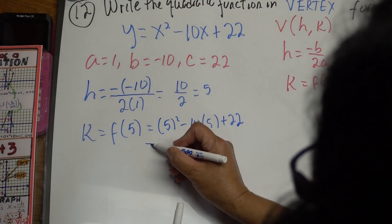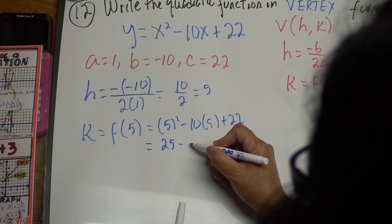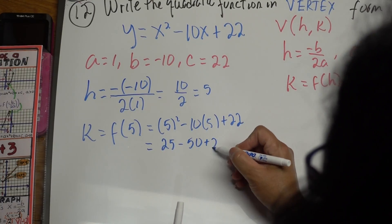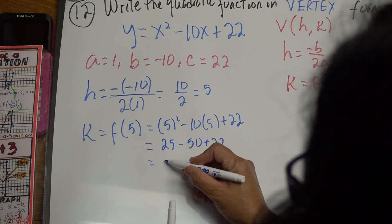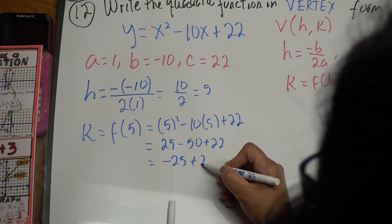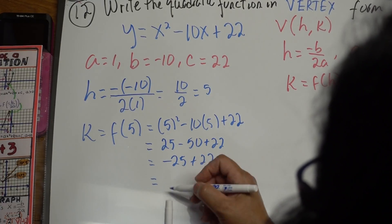Following order of operations, we have 25 minus 50 plus 22, that gives us negative 25 plus 22, which is negative 3.